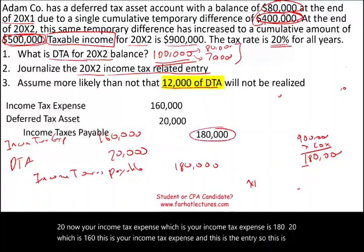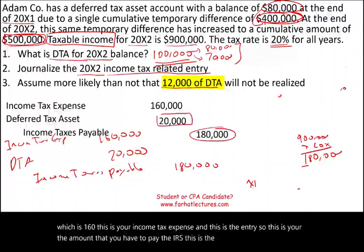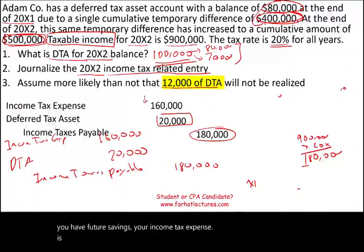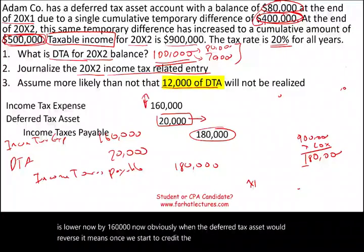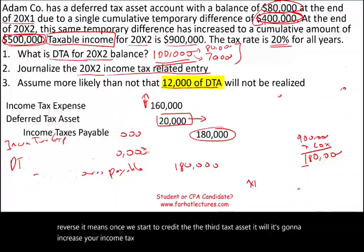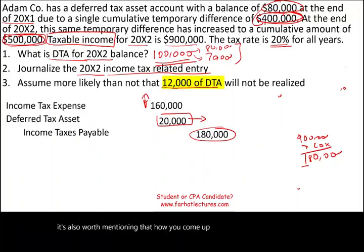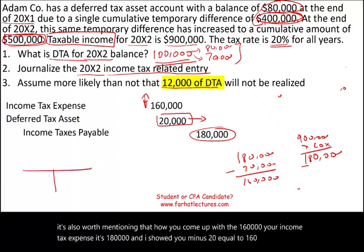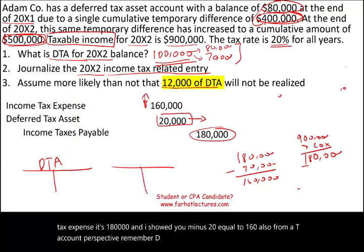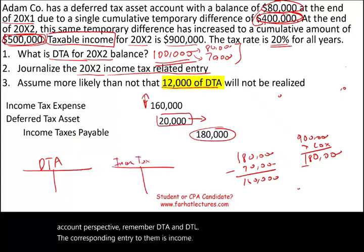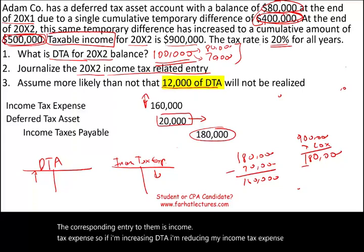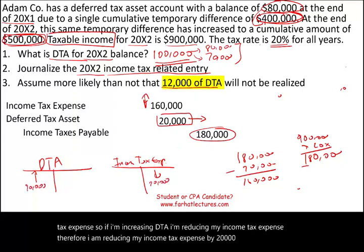So $180,000 is the amount you pay the IRS, $20,000 represents future tax savings, and because you have those future savings your income tax expense is lower at $160,000. From a T-account perspective, DTA and DTL have income tax expense as their corresponding entry. If you're increasing DTA, you're reducing income tax expense — reducing it by $20,000 and increasing DTA by $20,000.